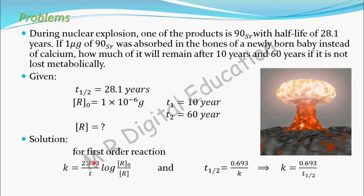For a first-order reaction, the rate constant k equals 2.303 divided by t, multiplied by log of R₀ by R. In this equation, we know the time and the initial concentration R₀. We do not know the value of k, and we need to find the concentration R. To find R, we first need to find k.